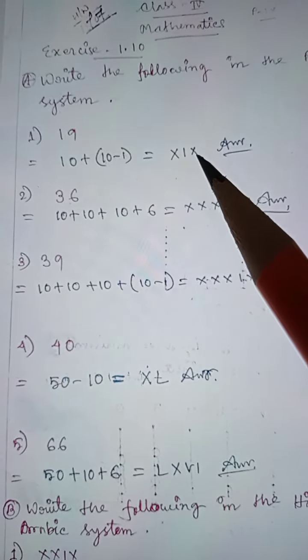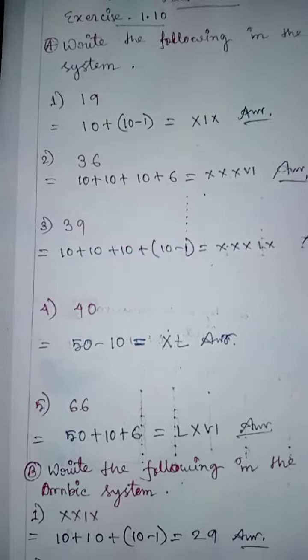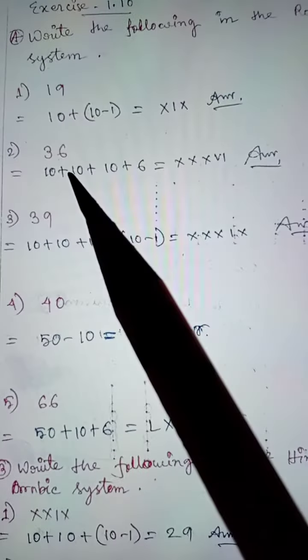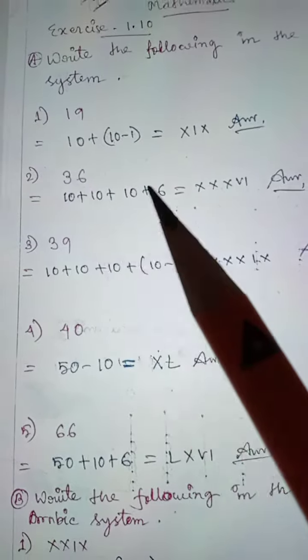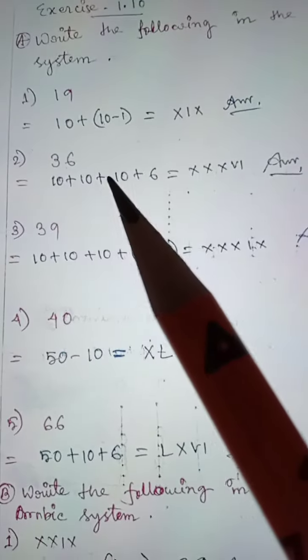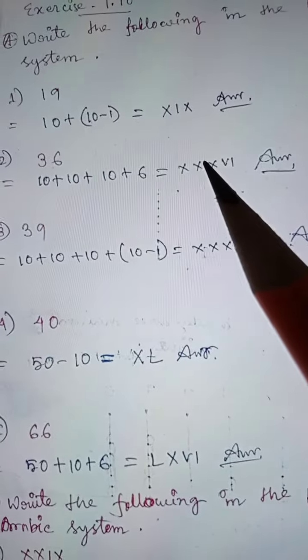Problem 2: 36. You have to write this in the Roman system. 36 equals 10 plus 10 plus 10 plus 6. Ten means X, so you have to write X three times.